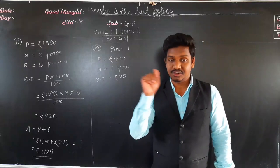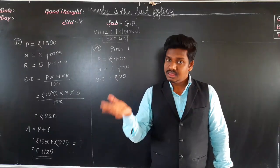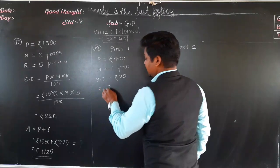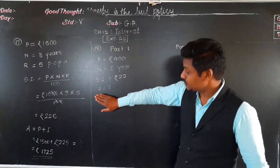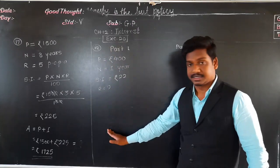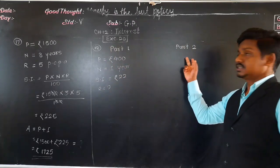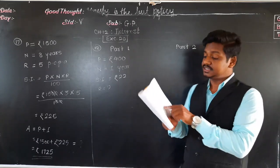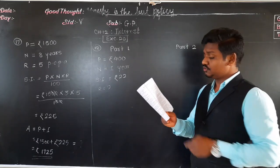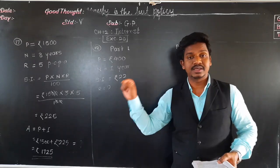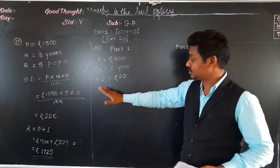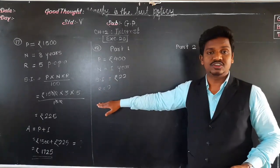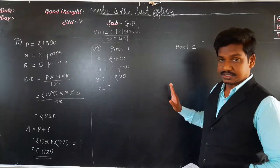Whatever rate of interest we get in Part 1, with that same rate of interest we solve Part 2. Part 2 asks: find the simple interest on rupees 500 in 2 years at the same rate of interest. To find rate of interest, we use the same SI formula — there is no separate formula.